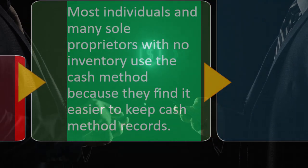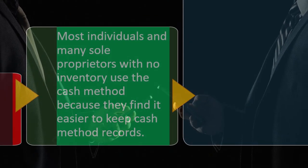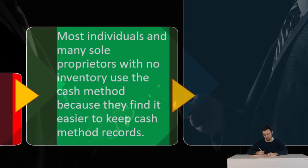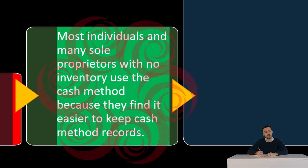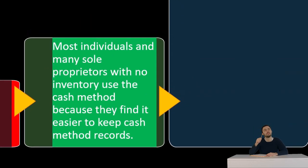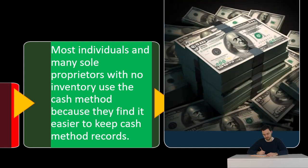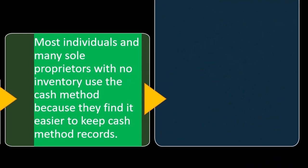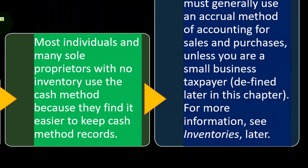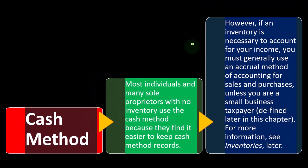Oftentimes, it's only when there's a difference in the time of purchase versus time of use that the methods diverge. For example, if you bought supplies and didn't consume them until sometime in the future, under an accrual-based system you'd put them on the books as an asset first, then expense them when consumed. Most individuals and many sole proprietors with no inventory use the cash method because they find it easier to keep cash method records.